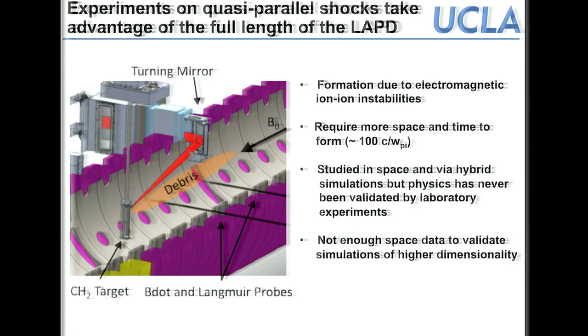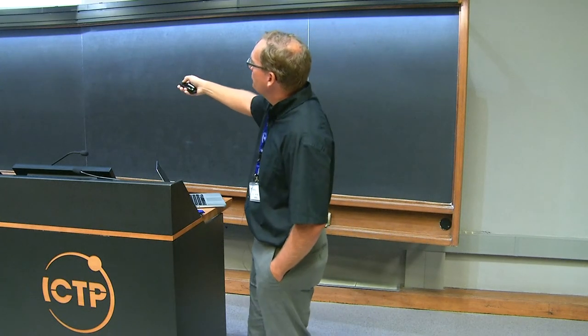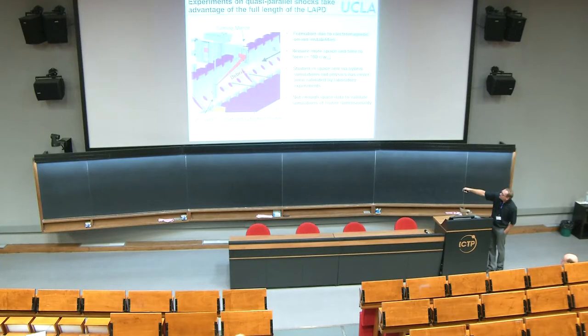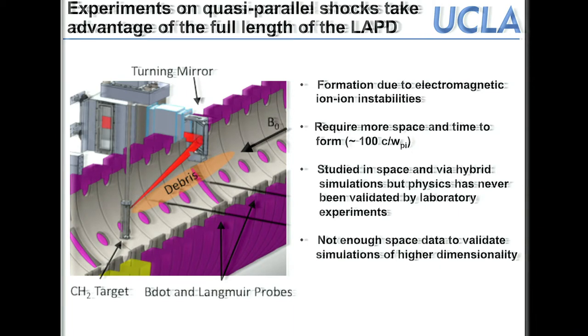Now for the parallel case, which is more interesting because parallel shocks are formed by electromagnetic ion-ion instabilities — depending much more on turbulence. It's essentially the same experiment using the LAPD and the same laser but in a different geometry: the target is in the center of the machine with its surface facing along the magnetic field, and the beam comes in via a large mirror inside the vacuum vessel, so debris explodes exactly along the plasma column and magnetic field direction.